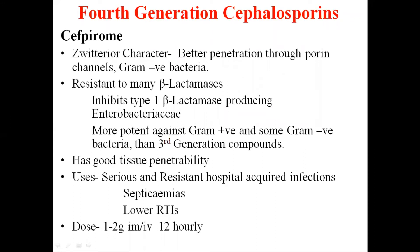The second 4th generation drug is Cefpirome. A peculiar characteristic of Cefpirome is its zwitterion character, which is exhibited in in vitro studies. These zwitterionic compounds show rapid penetration through the outer membrane of gram-negative organisms. Because of this function, Cefpirome has better penetration through the porin channels of gram-negative bacteria and is therefore very effective against gram-negative infections.